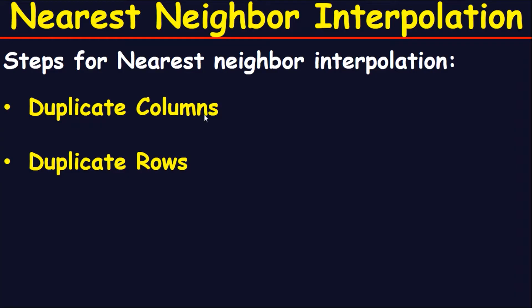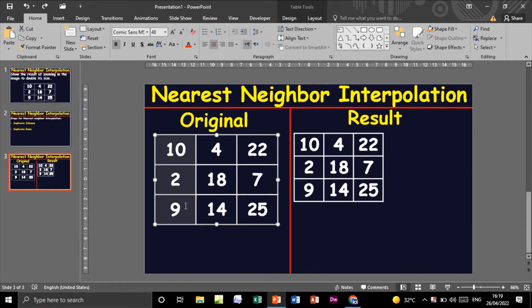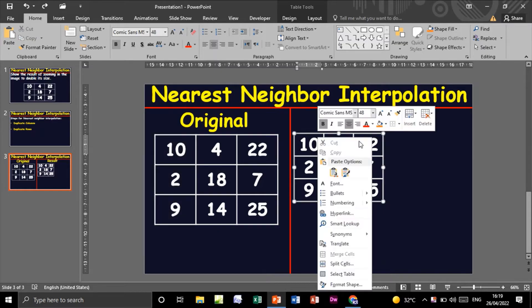The first step is to duplicate the columns, and the second step is to duplicate the rows. Let's apply this. Here is the original image, and this will be the result. To use nearest neighbor interpolation, we start by duplicating the first column.